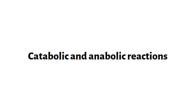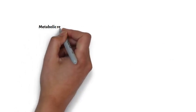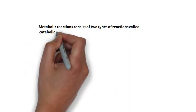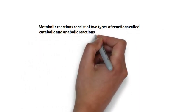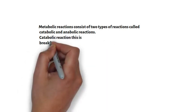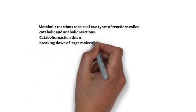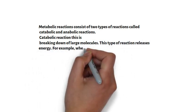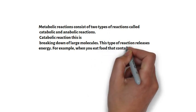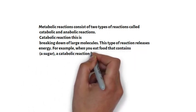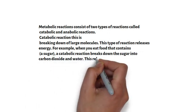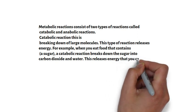Let us look at catabolic and anabolic reactions. Metabolic reactions consist of two types: catabolic and anabolic reactions. Catabolic reactions involve the breaking down of large molecules, and this type of reaction releases energy. For example, when you eat food that contains glucose, a catabolic reaction breaks down the sugar into carbon dioxide and water, releasing energy that you can use to do things like exercise and take part in sport.